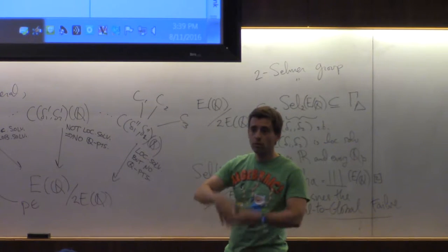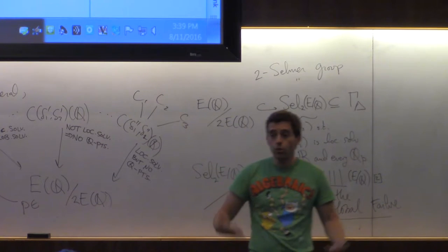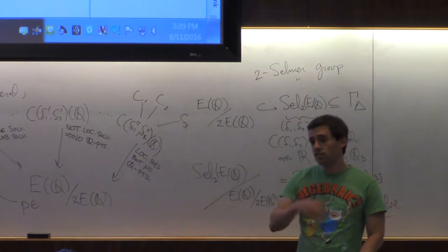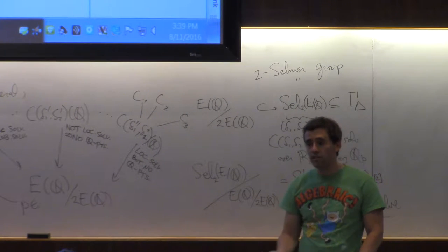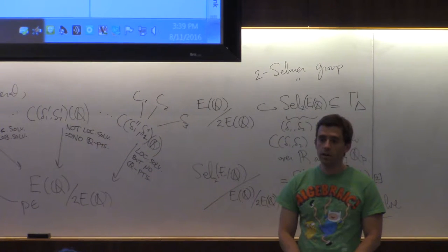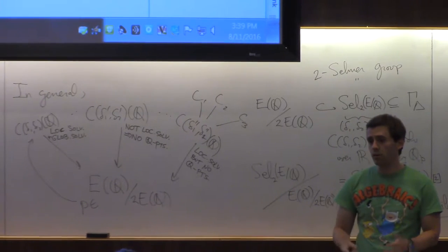The equations get too complicated to write down. And I think there are several descents that we don't include five descents, three descents, but it just gets very complicated how to find those equations.